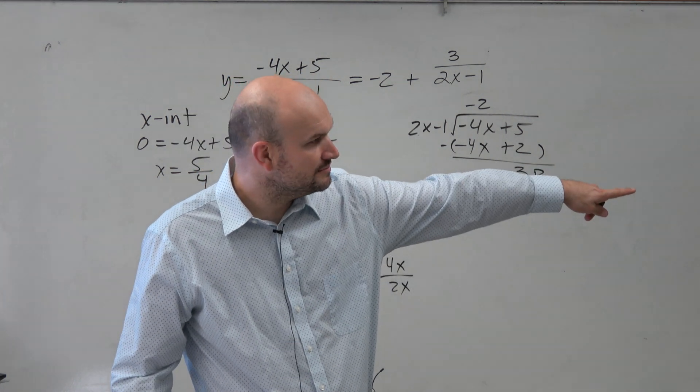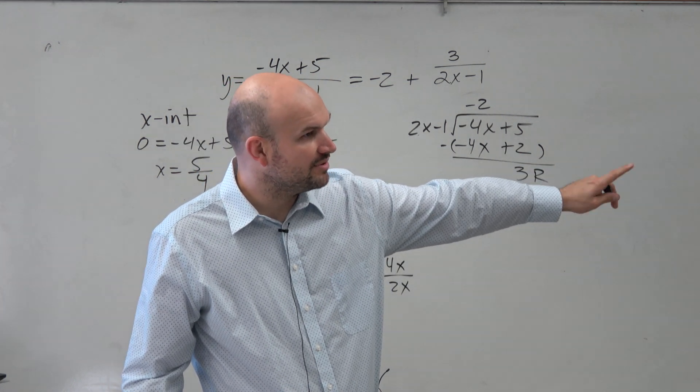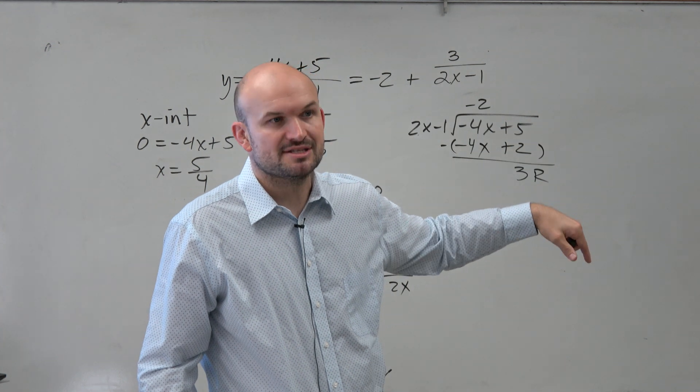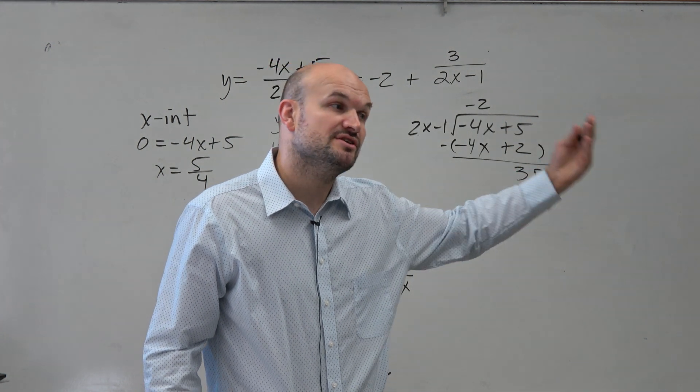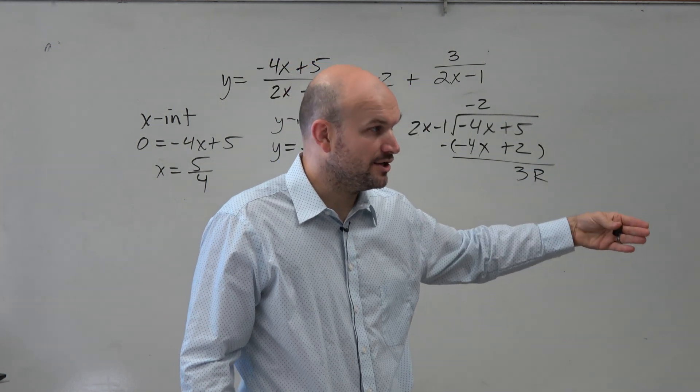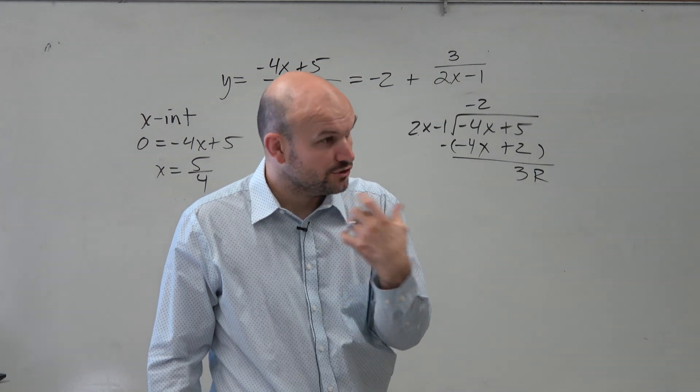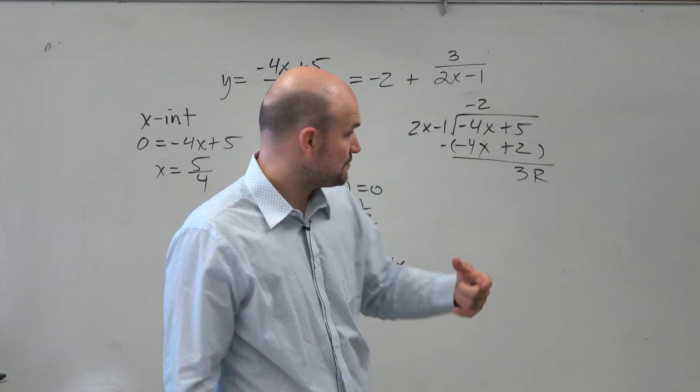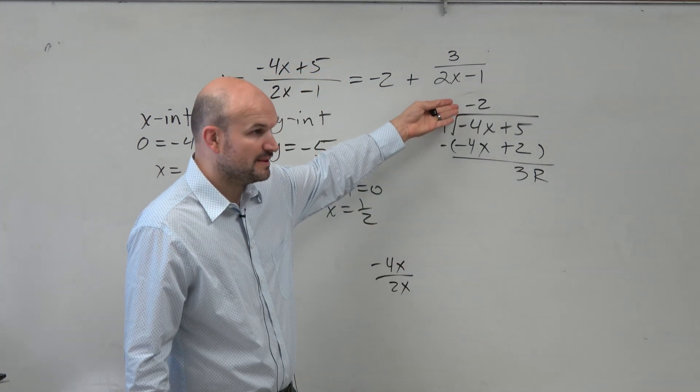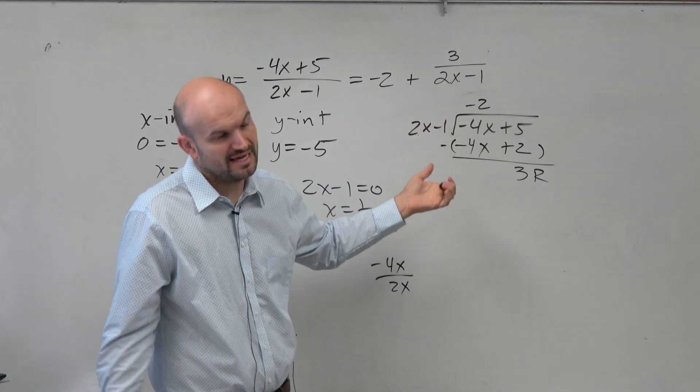It is the quotient plus the remainder over the divisor. When you do division, especially with polynomials, and you have a remainder, you can write the quotient as your answer from the division plus the remainder over your divisor. That is the quotient.